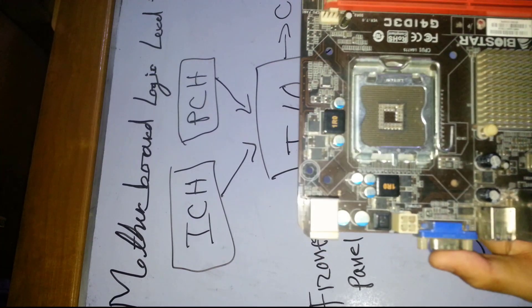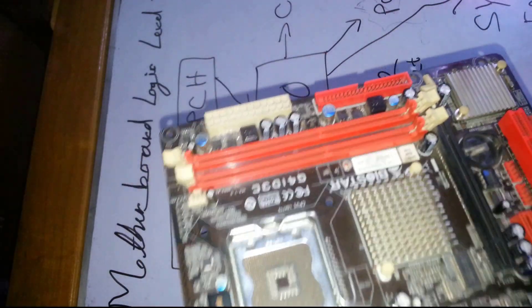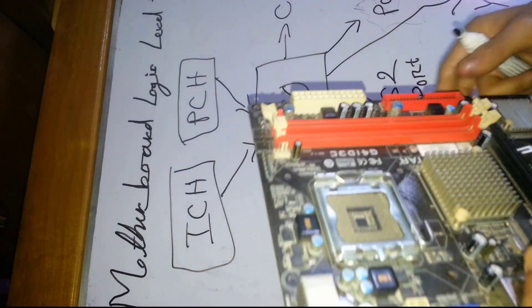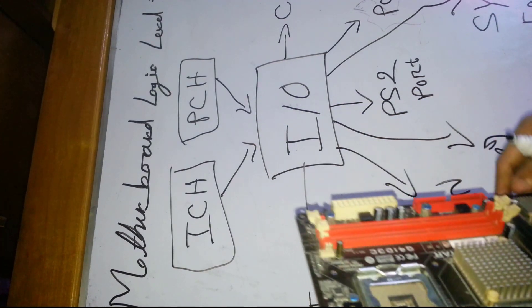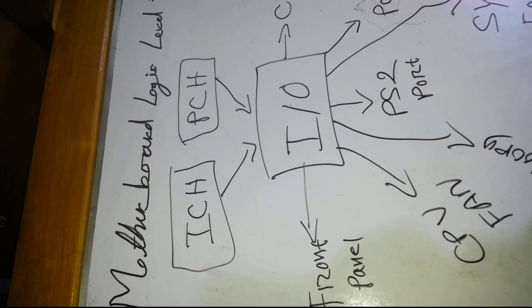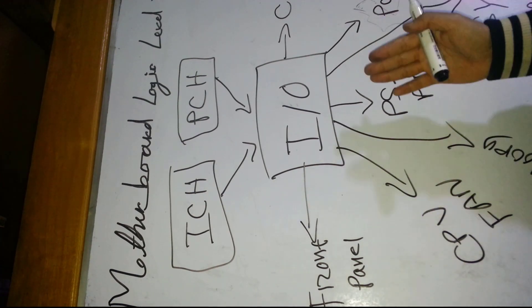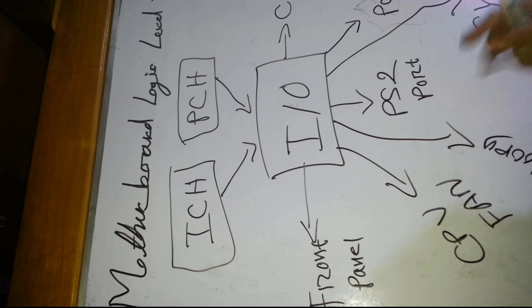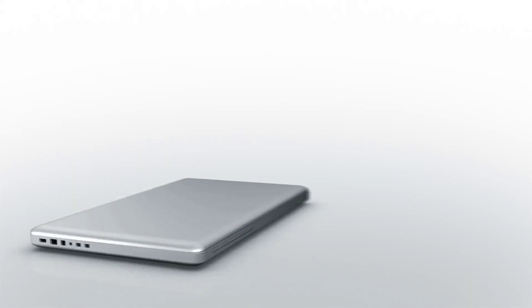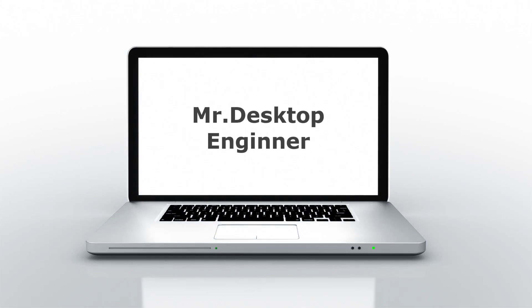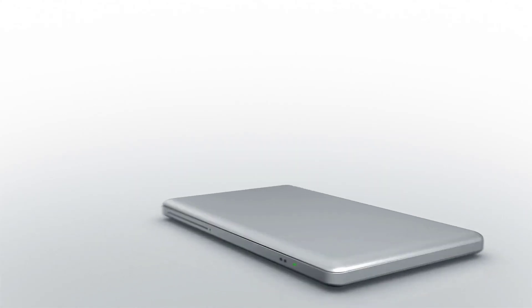CPU fan is connected, system fan is connected, cooling fan is connected. PS2 port and floppy controller are connected. This completes the Motherboard Logic Level overview. Thank you very much for watching this video. Please support and subscribe to our YouTube channel.